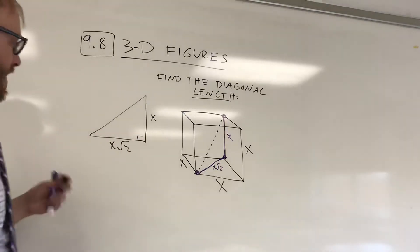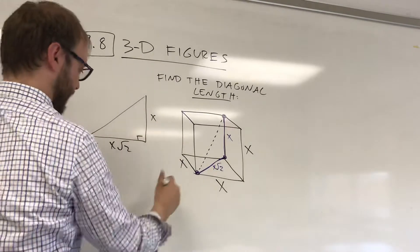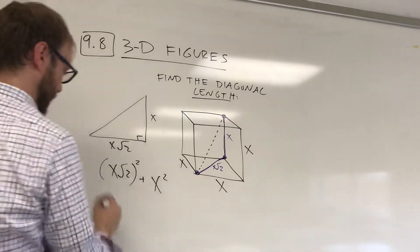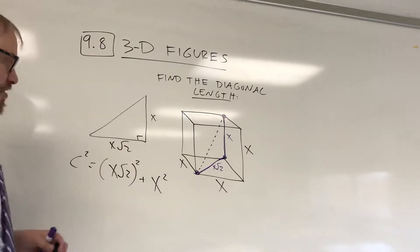And according to the Pythagorean theorem, we can take this side squared plus this side squared, and it's going to be equal to the hypotenuse squared.